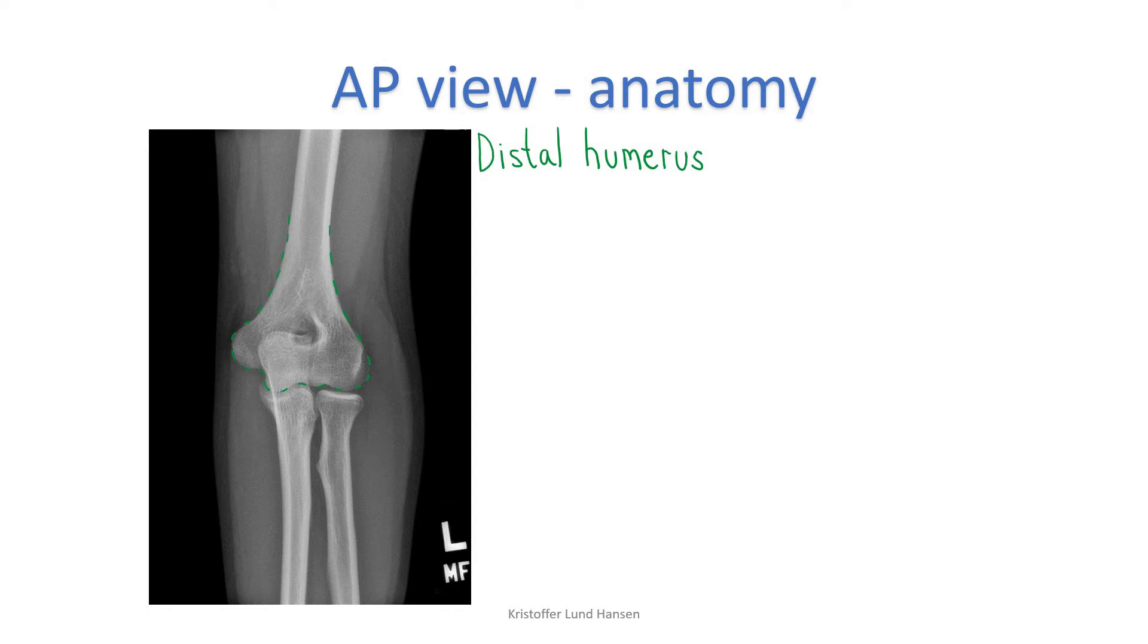First, we have the distal part of the humerus, marked green. The distal part of the humerus has more interesting structures that we have to know of. The most distal surface that is articulating with the ulna is the trochlea. The surface that goes against the radius is the capitellum. On each side of the distal humerus, we have both the lateral and the medial epicondyle.